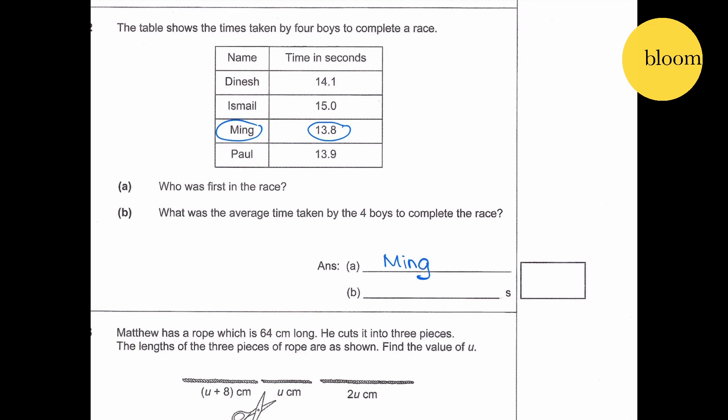Part B: What was the average time taken by the 4 boys to complete the race? That will be 14.1 plus 15.0 plus 13.8 plus 13.9 divided by 4. So that will give 14.275, which is almost 14.3.